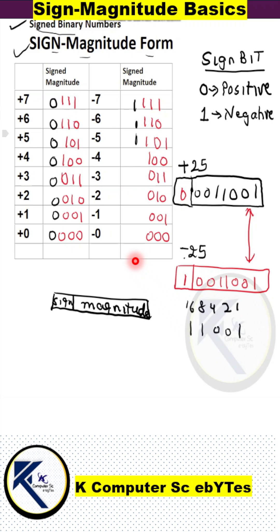So you see in this method, there are two representations of 0: plus 0 as 0000 and minus 0 as 1000.